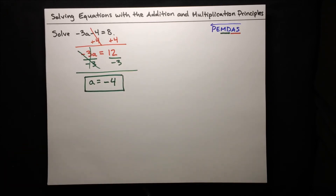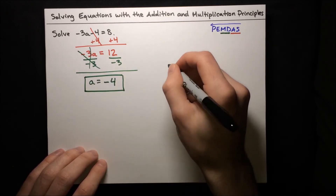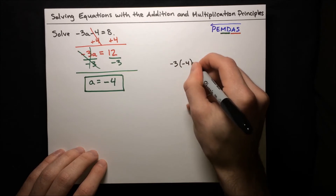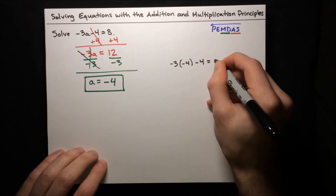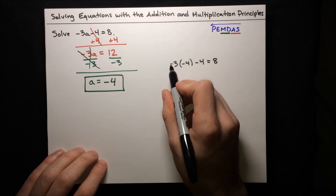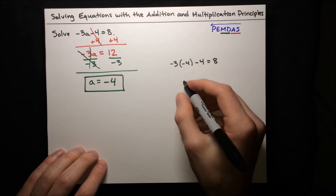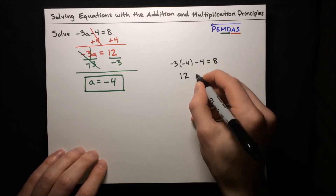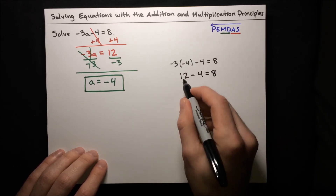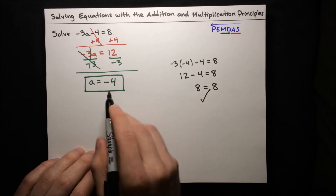Just to make sure we've done everything right, let's plug negative 4 back into our equation and make sure it checks out. So negative 3 times a — a is negative 4 — and then minus 4 has to come out to 8. Well, negative 3 times negative 4: a negative times a negative means the negatives cancel, giving us positive 12. And 12 minus 4 equals 8 — yes, that's true. So our answer is correct.